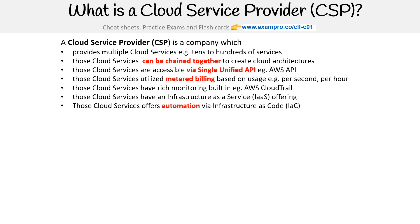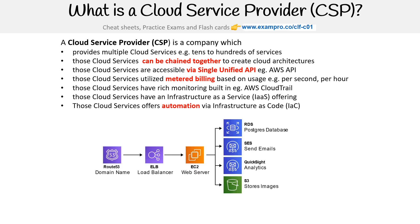Those cloud services offer automation via infrastructure as code, so you can write code to set everything up. Here's an example of an architecture where we have a simple web application running on EC2 behind a load balancer with a domain with Route 53. The idea is just to show that you're chaining these things together.